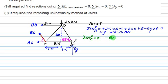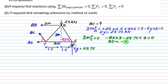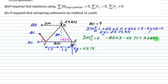The moment of BD about point C is anticlockwise, so it is minus BD multiplied by perpendicular distance of 3. The moment of EY (which is 23.75 kN) is also anticlockwise, so it is minus 23.75 multiplied by the perpendicular distance of 3. Solving this equation gives the value of BD. Keep this answer and continue — no answer is finalized until the problem is complete.